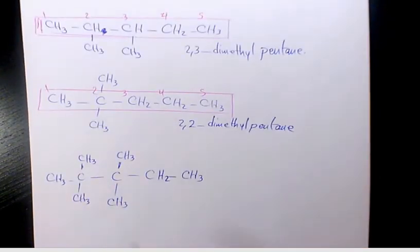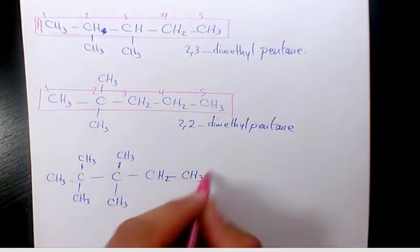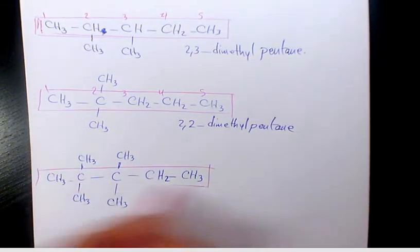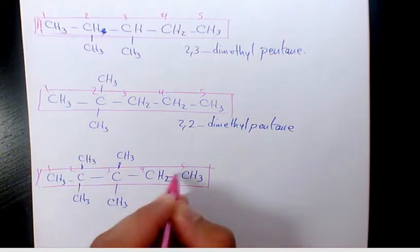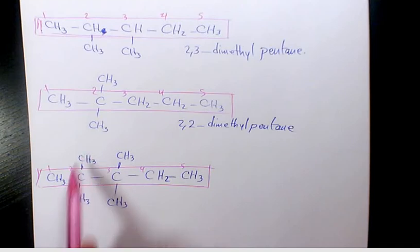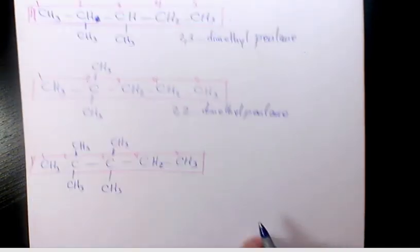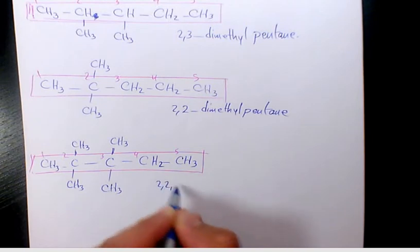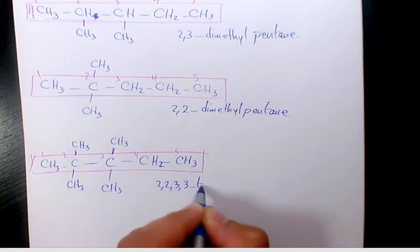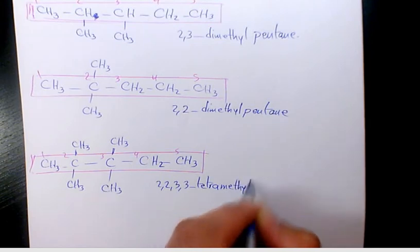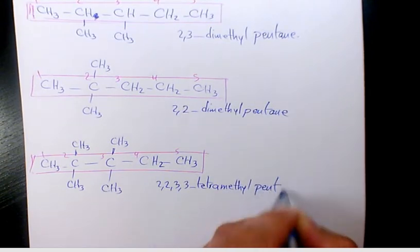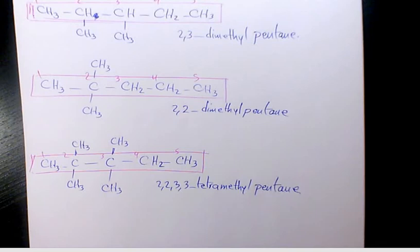And here we have again five carbons on the main one - one, two, three, four, five. We have two methyl groups on the second carbon and two methyl groups on the third carbon. So it's going to be 2,2,3,3-tetramethylpentane. That's the name of these organic compounds.